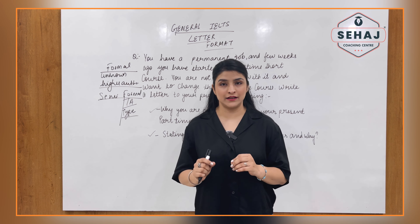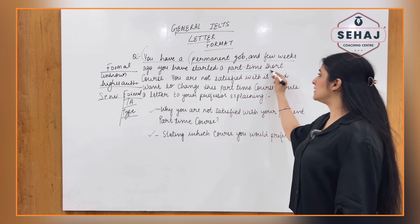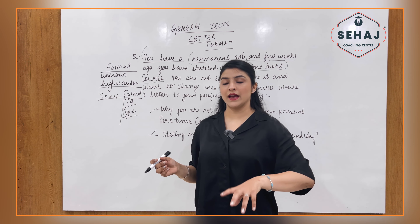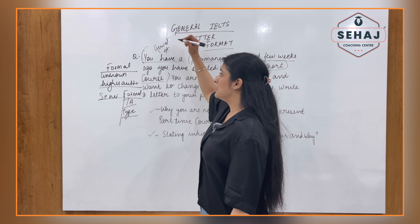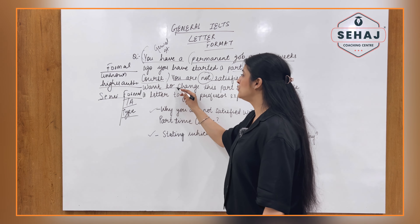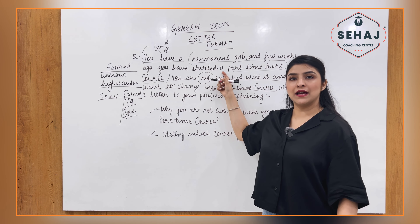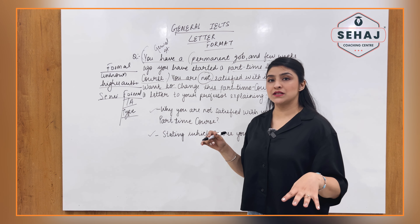Every time you read the question statement, it says 'you have' or 'you are' — something related to you starts. For example: 'You have a permanent job, and a few weeks ago you started a part-time short course.' So you have a permanent job somewhere and alongside that you have started a short-term part-time course. This is the general statement. After the general statement, the situation starts: 'You are not satisfied with it and want to change this part-time course.' Here we understand our situation — we have a permanent job and started a part-time course, but we are not satisfied and want to change the course.